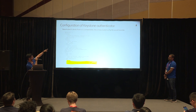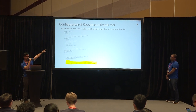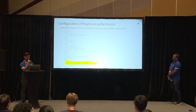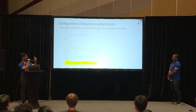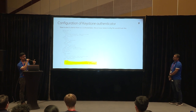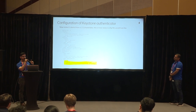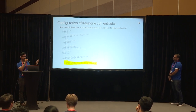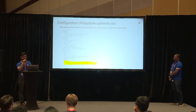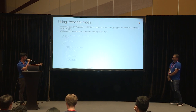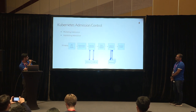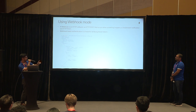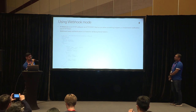The server shown at the top is basically the webhook API server that I'm pointing to. This config file is for version v1.11 and above. For people who are using clients older than v1.11, you will have to make a slight modification — that's shown on the next slide. This is showing the policy configuration.